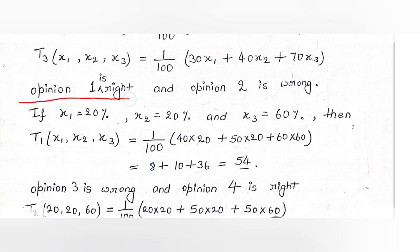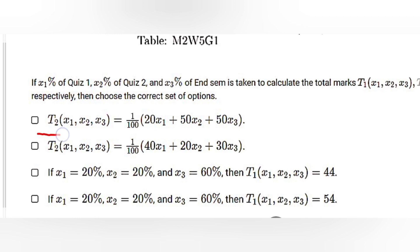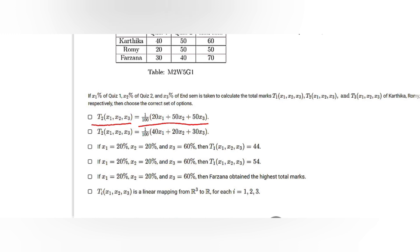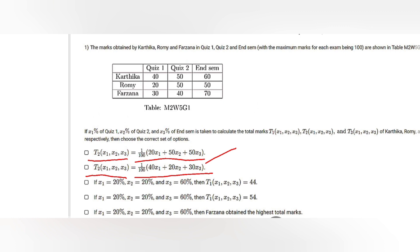Option 1 is right and Option 2 is wrong. Option 1 states that T2(x1, x2, x3) = (1/100)(20x1 + 50x2 + 50x3), which matches our derivation. Option 2 from the question states T2(x1, x2, x3) = (1/100)(40x1 + 20x2 + 30x3), which is incorrect. For Rumi, T2 = (1/100)(20x1 + 50x2 + 50x3), so our first option is correct and the second one is wrong.